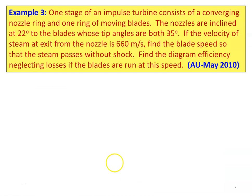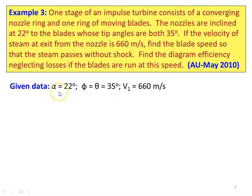Example 3. One stage of an impulse turbine consists of a converging nozzle ring and one ring of moving blades. The nozzles are inclined at 22 degrees to the blades whose tip angles are both 35 degrees. Steam velocity at nozzle exit is 660 meters per second. Find the blade speed so that steam passes without shock. Find diagram efficiency, neglecting losses, if blades run at this speed.